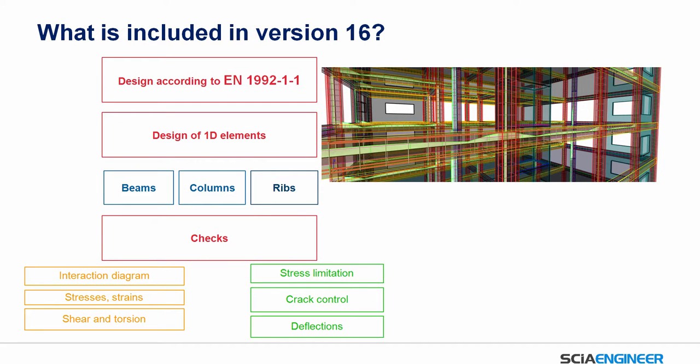At this moment, what is included in version 16? We have the design according to Eurocode. There is the design of 1D elements like beams, columns, and ribs. We have ULS checks like the interaction diagram, stresses, strains, shear and torsion. And SLS checks like stress limitation, crack control and deflections.